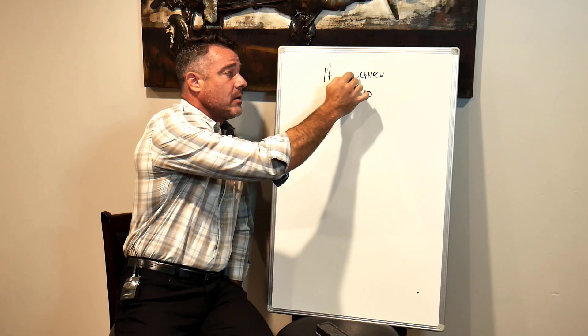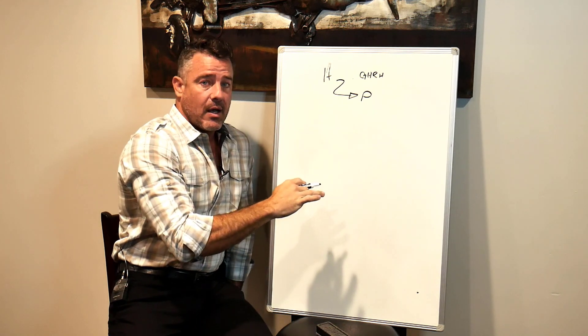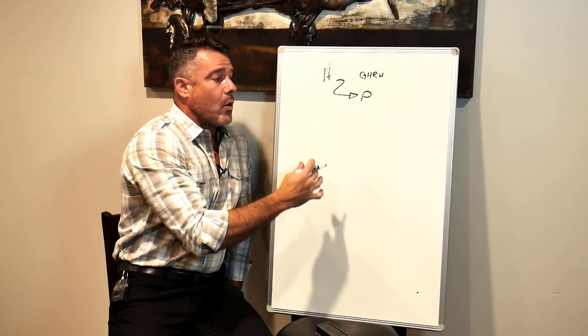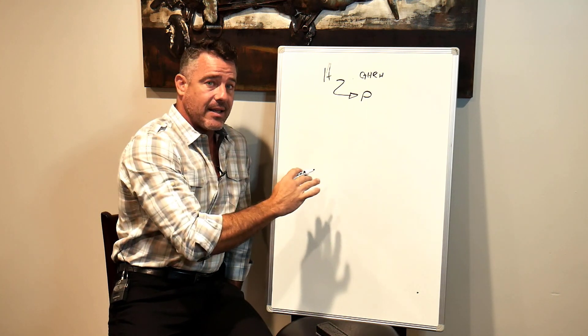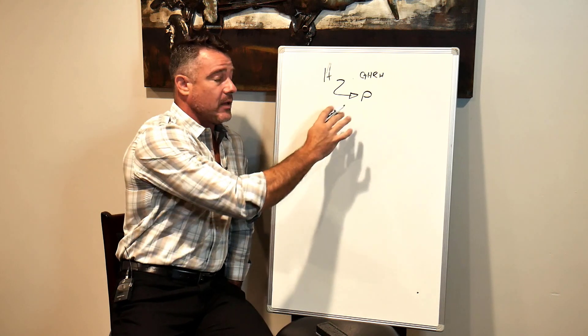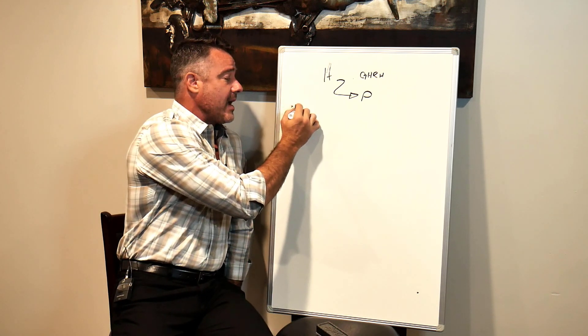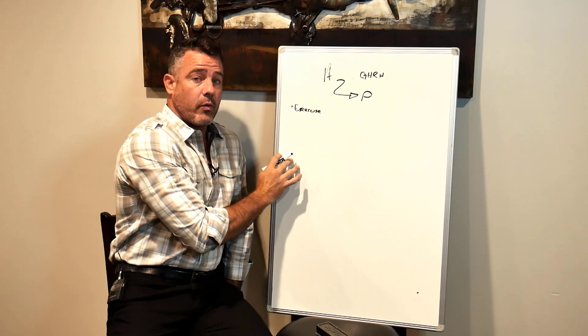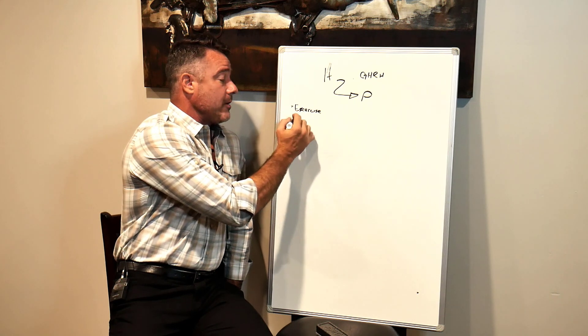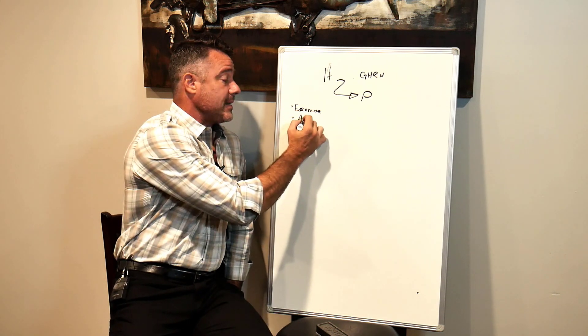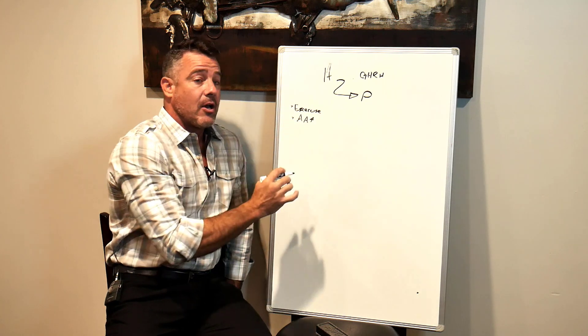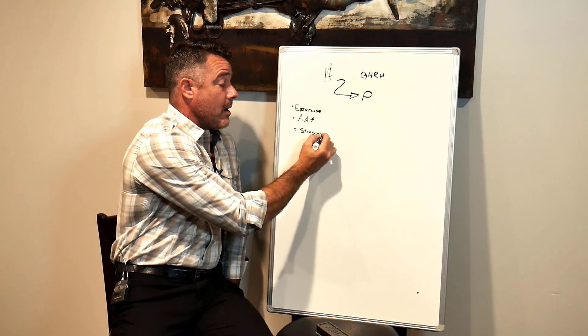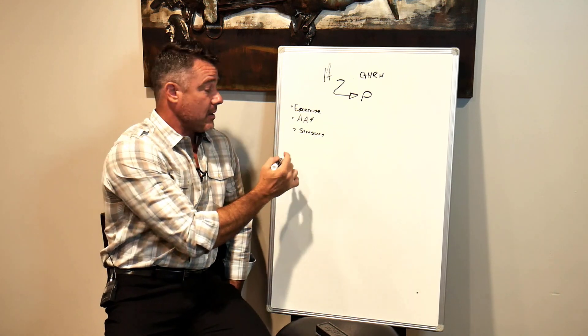That is the signal that when the hypothalamus sees low levels of growth hormone, actually IGF-1, it says we need a little more. There are some other things that can signal this as well. Heavy exercise is one signal for growth hormone production. An increase in protein intake or amino acid intake does it. There are certain stressors, both good and bad, that increase this as well.